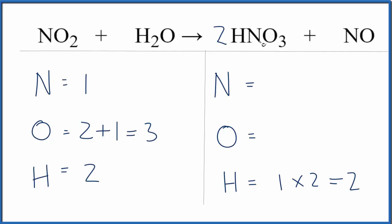So now I have nitrogens, one times two. That gives me two plus the one over here. So I have three nitrogens and oxygens. Three times two is six plus this one oxygen here. So I have seven oxygens.